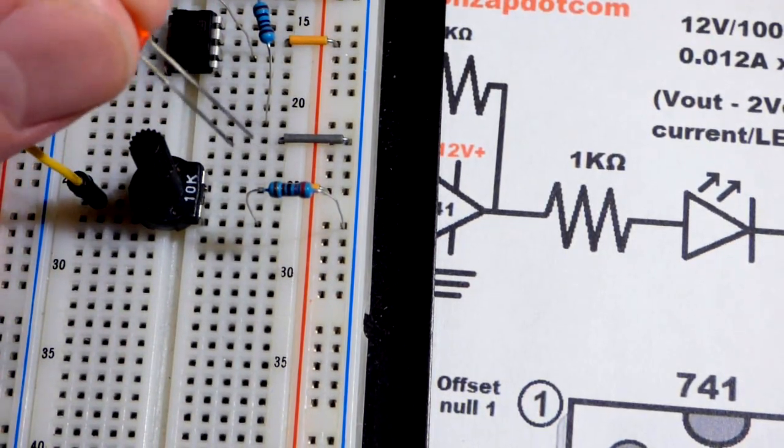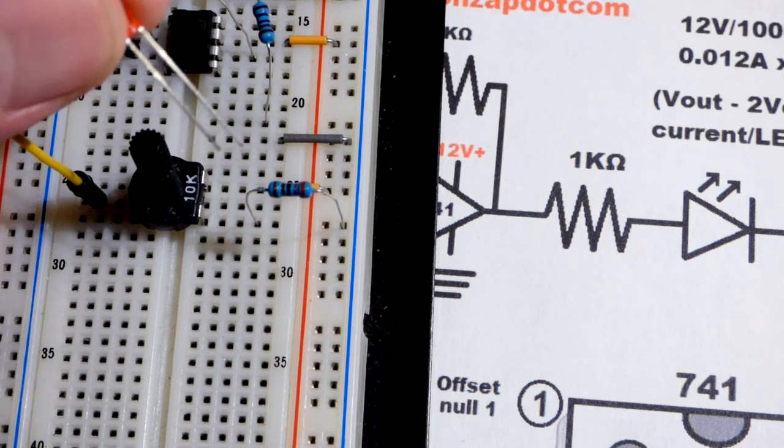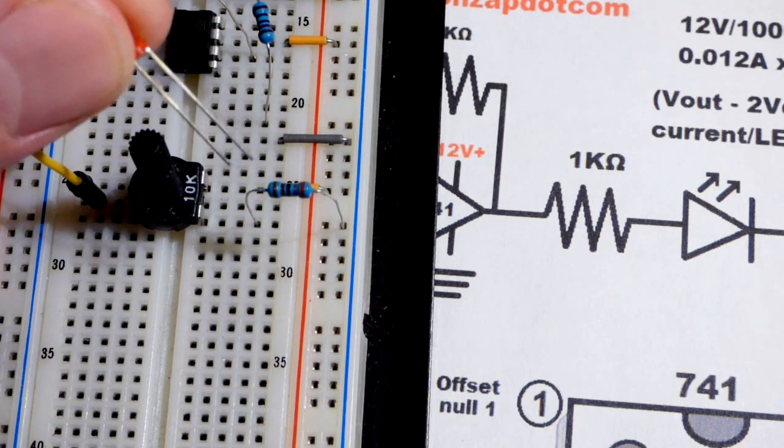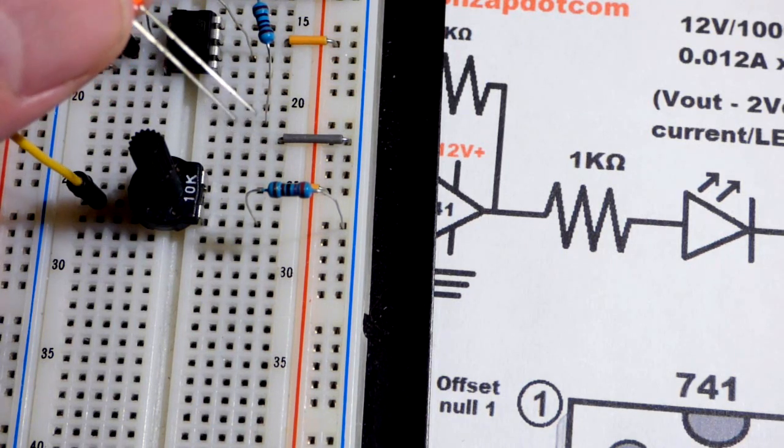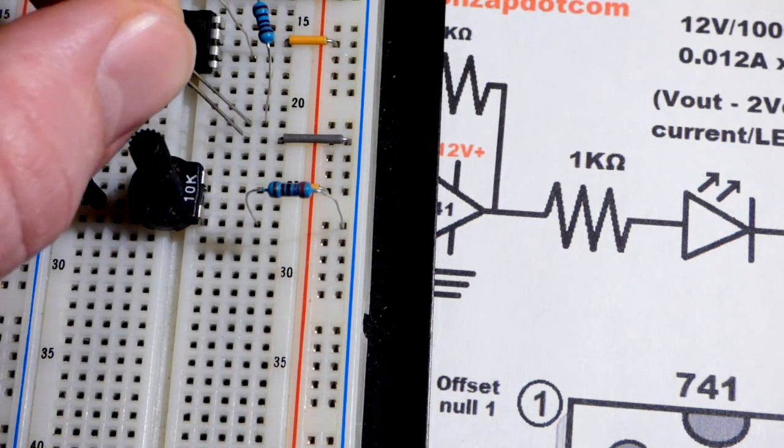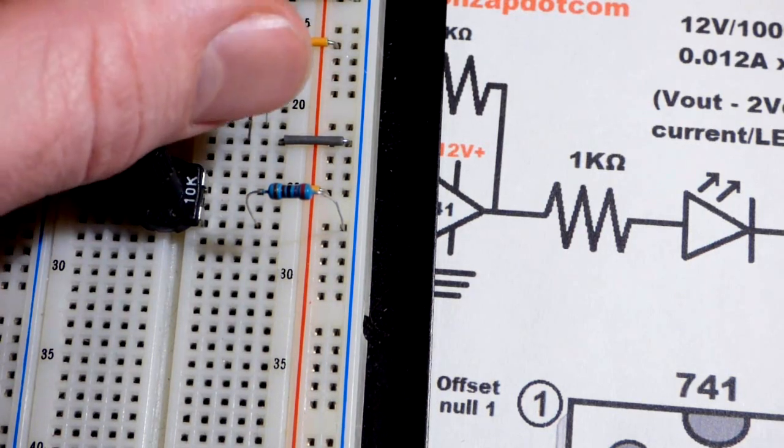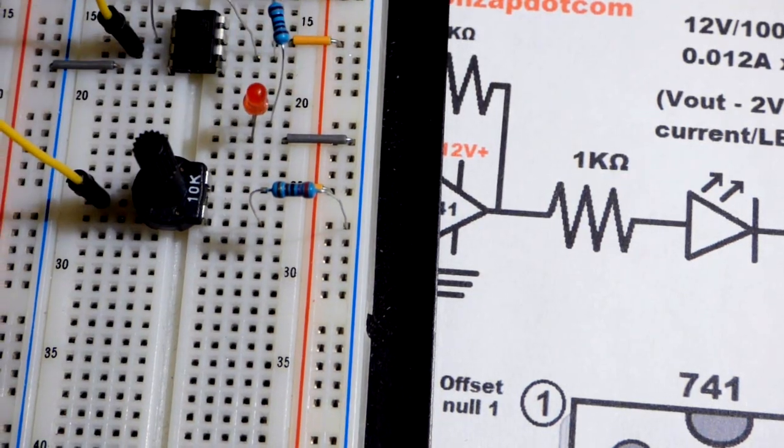We have the resistor there. Now we have the LED. The LED is polarized. The anode, the longer lead right there, needs to go towards the positive side of the circuit for it to light up. And the cathode, the short lead to the negative side. We're going to put the cathode to that ground wire right there. And that is it.